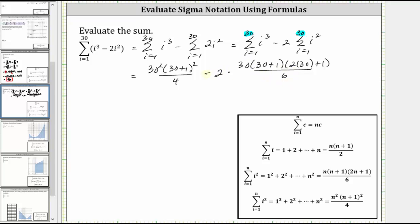Notice here we can simplify the six and the 30. There's one six in six, and five sixes in 30. So we have 30 squared times 31 squared divided by four, minus, and then here we have two times five, that's 10 times 31 times 61.